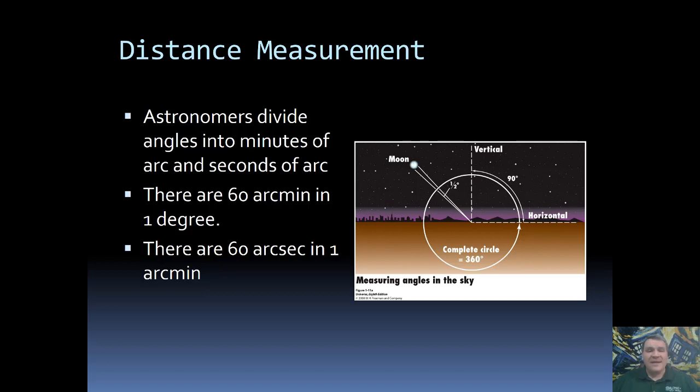Even an arc minute is often too large, so we want to make it smaller. So what are we going to do? That's right. We're going to split that up into 60 smaller pieces too. We take one arc minute, split it up into 60 smaller pieces, and that is what we refer to as an arc second or second of arc.